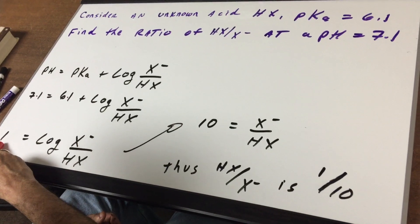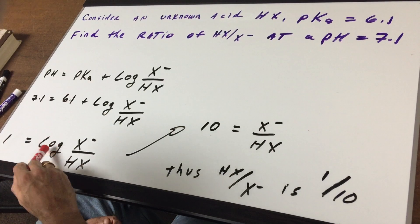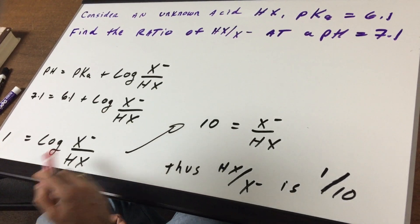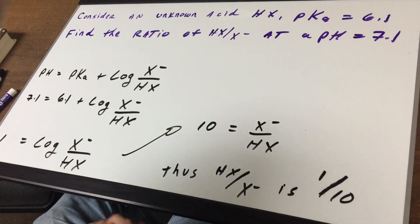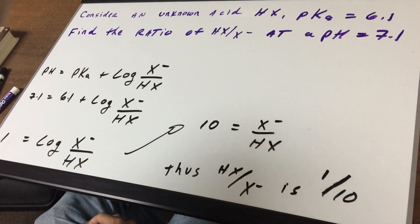I'm going to subtract 6.1 from both sides, and I get 1 equals the log of x minus over HX. I take the anti-log of both sides, which gives me 10. 10 is the ratio of salt to acid.